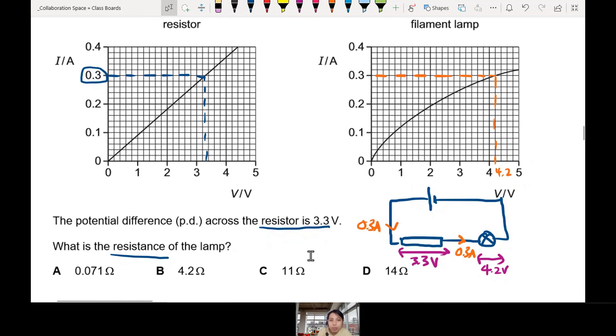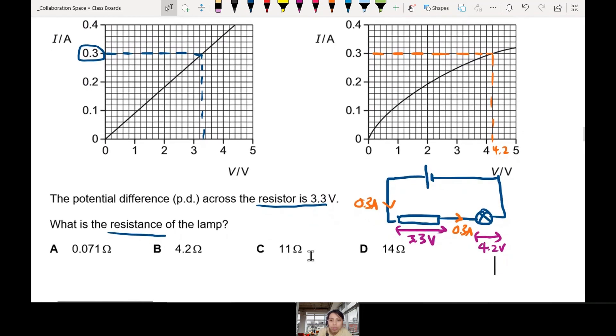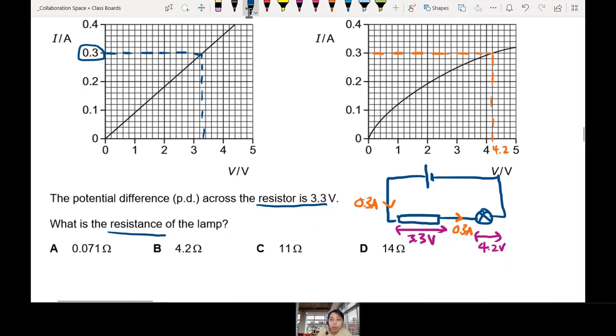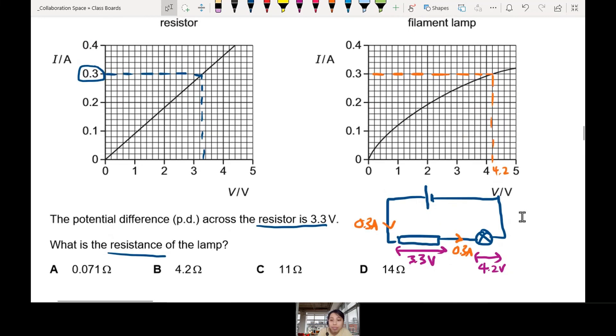But they want resistance of the lamp. So the last step we need to do is to do our VIR calculation for the lamp itself. Because we know V, we know I. So for the lamp, V equals IR, R equals V over I, which is 4.2 over 0.3.